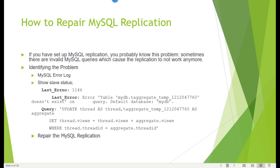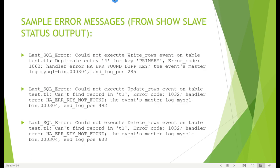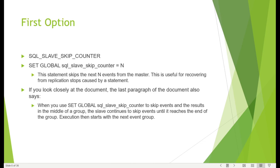There are a few more sample error messages you can have in your SHOW SLAVE STATUS or in your error log file. The first is a duplicate error on insert because the record was already there. The second is a failure to update, and the third involves a delete. In all these cases the record was already there on the replica, meaning somebody did some changes on the replica side - that is why we got these errors.